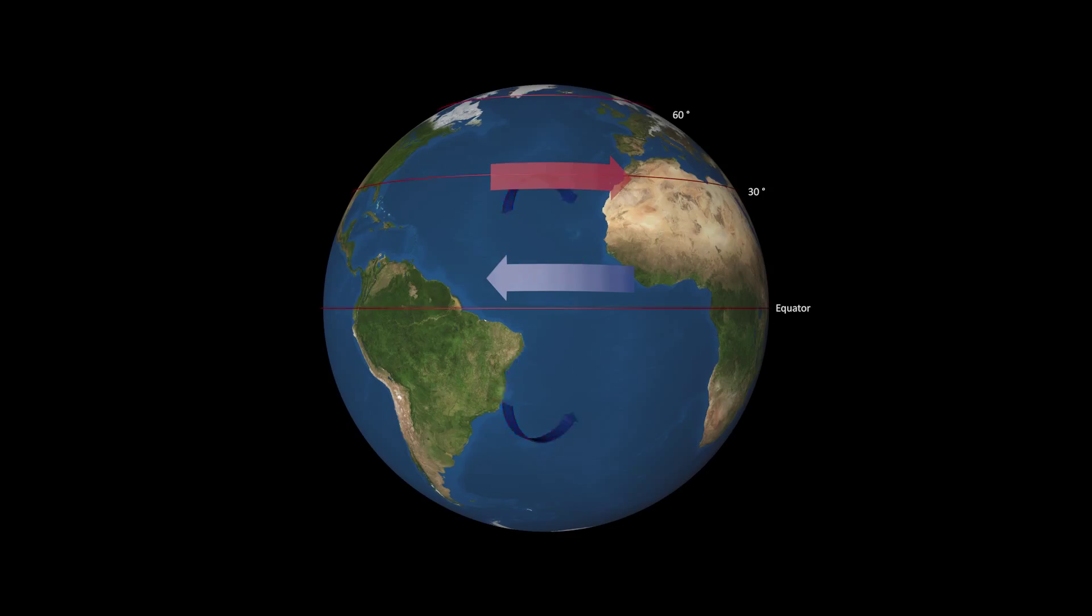Therefore, winds in the upper atmosphere move towards the east, and at the ocean surface, they move towards the west. These surface winds are known as the trade winds.